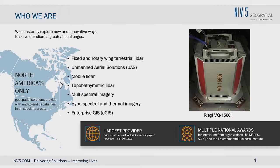We are a geospatial firm and we do everything from collecting source data. We collect imagery — we have around 12 planes, we fly over large parts of the country and collect aerial imagery. We also collect thermal imagery and hyperspectral imagery. We also collect a technology called LiDAR, which some of you may be familiar with. The new iPhone 12 has a LiDAR sensor on it. We use the LiDAR laser to measure objects in space, giving us three dimensions that allow us to characterize what's on the ground. We then take those data, convert them into information, and build systems that manage that information.